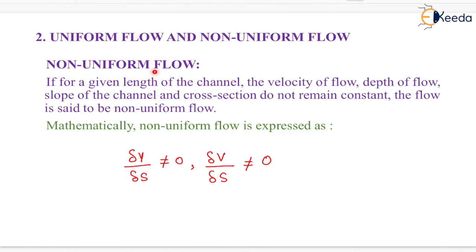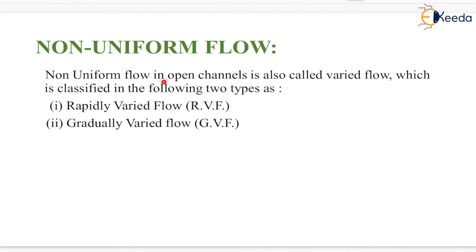Next is non-uniform flow. If for a given length of the channel, the velocity of flow, depth of flow, slope of the channel, and cross section do not remain constant, the flow is said to be non-uniform flow. Mathematically, ∂y/∂s ≠ 0 and ∂v/∂s ≠ 0. Non-uniform flow in open channels is also called varied flow, which is classified into two types: rapidly varied flow and gradually varied flow.